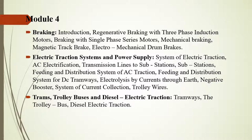Also covered is the feeding and distribution for DC tramways, the electrolysis process for current through the earth, the return path to be considered, the negative booster, and the trolley wires, along with some examples of electric traction systems.